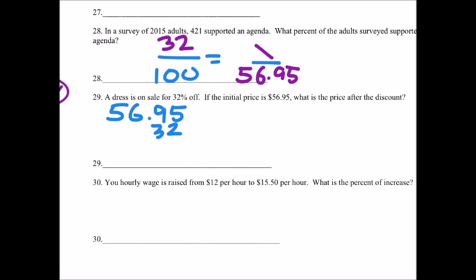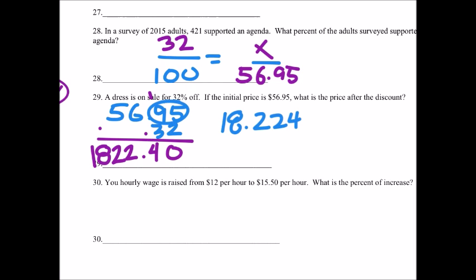So we can just multiply these like this. We have two decimal places, so we have four decimal places. All right, we don't really need the four there though.